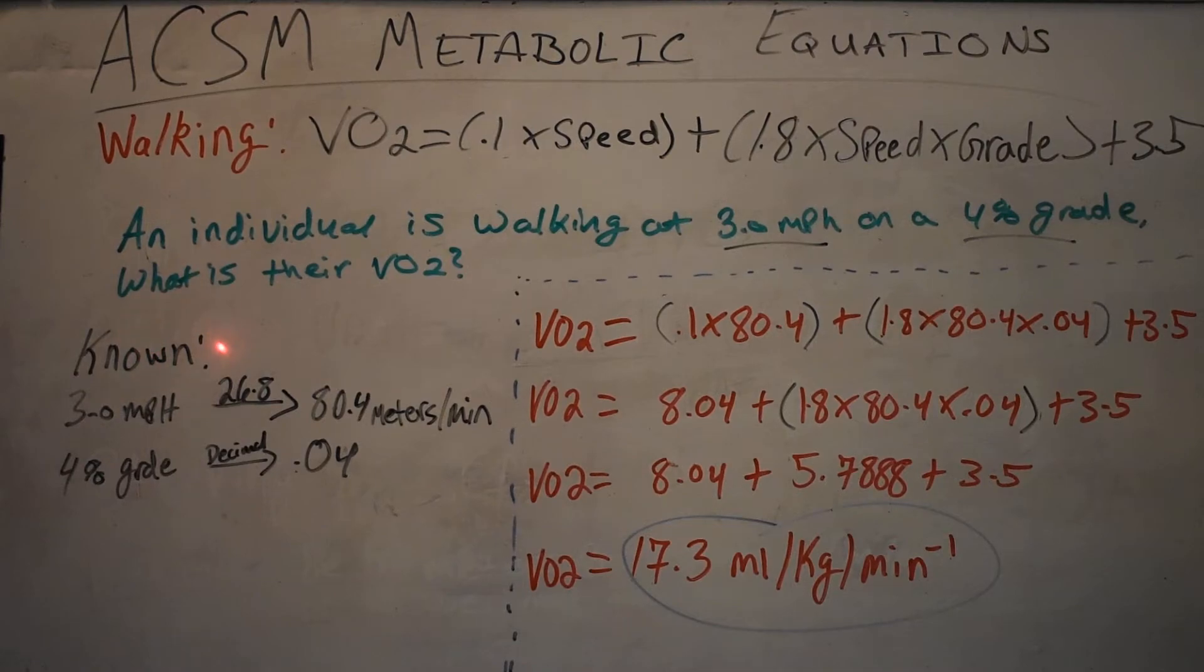However, they are going to assume that you know that you have to multiply the miles per hour by 26.8 to get to the meters per minute. They will not tell you that. They will never give you any of the conversion factors.